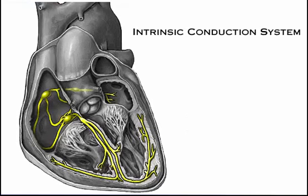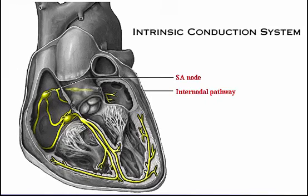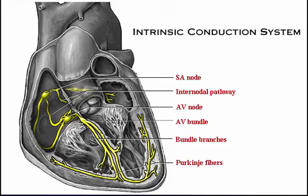This diagram shows the location of the autorhythmic or nodal cells of the Intrinsic Conduction System. Here we see the SA node, internodal pathway, AV node, AV bundle, bundle branches, and Purkinje fibers.